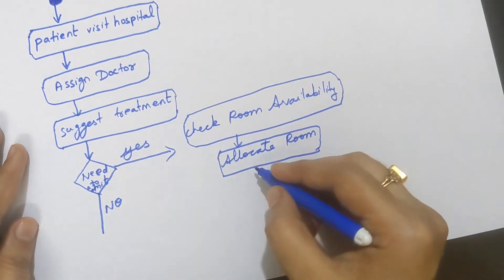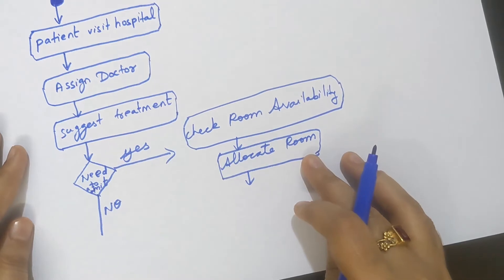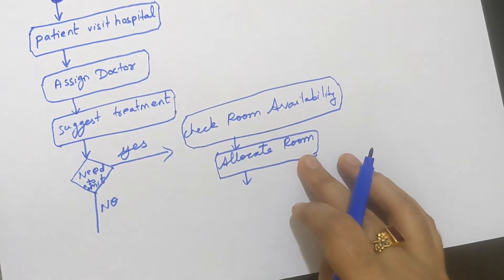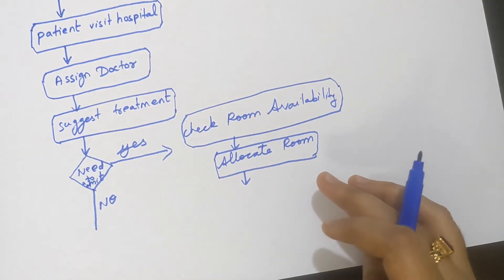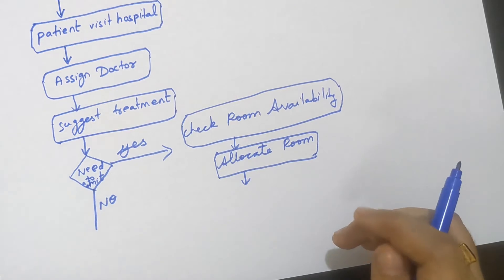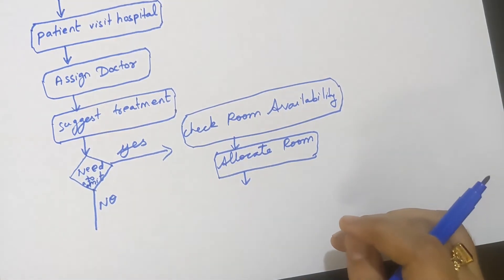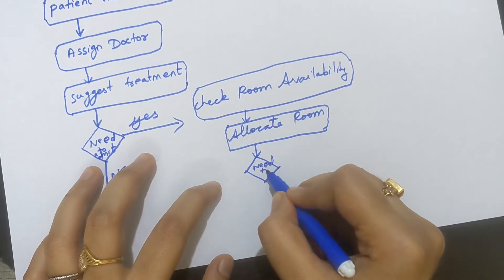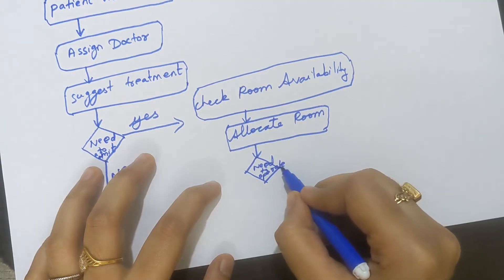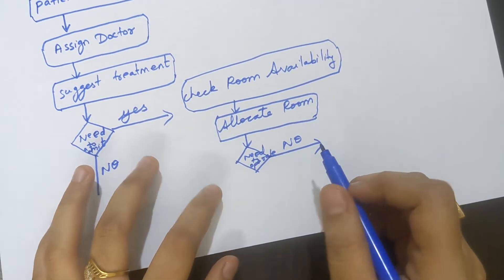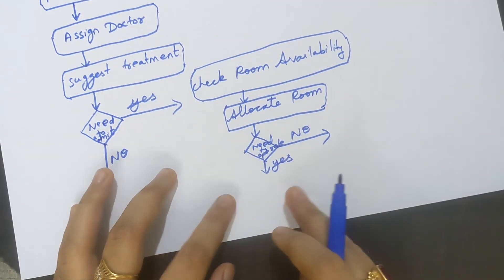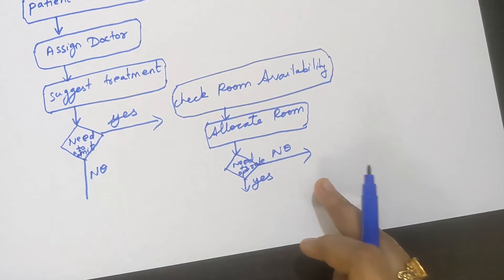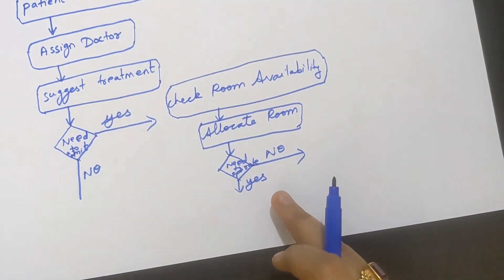After the room is allocated, sometimes the medicines given while admitted are enough to cure the patient, but sometimes an operation is needed. So draw another decision diamond labeled 'Need to Operate?' — yes on one side and no on the other. If no, no operation is needed for this patient.